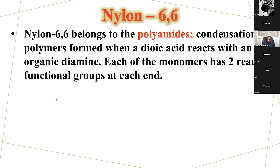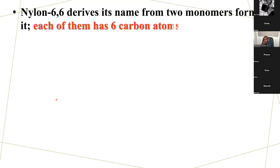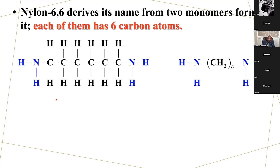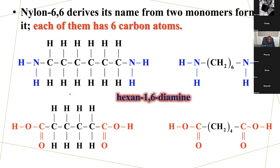So we have the functional group of amine, the amine, and we have the carboxylic group. So let's look at the monomers. We have hexane-1,6-diamine, which is now written in compressed form. Then we have hexane-1,6-dioic acid, which is summarized like this.